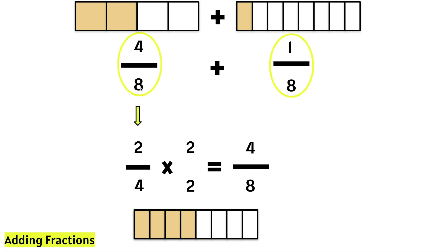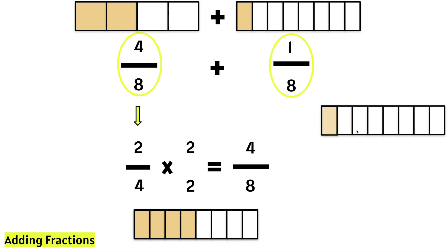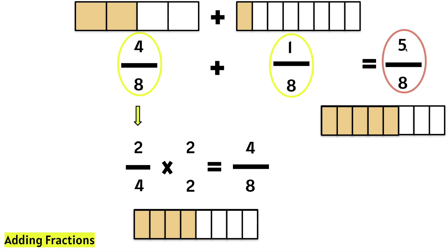Now we have common denominators, so we can add the eighths together. We have 4 eighths plus 1 eighth. 4 plus 1 is 5, and we are working with eighths. So, the sum is 5 eighths.